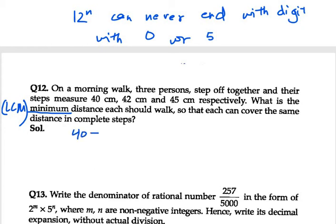We need to write them in terms of prime factors. 40 is 2 raised to power 3 into 5. 42 can be written as 2 into 3 into 7.